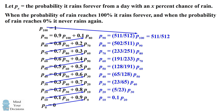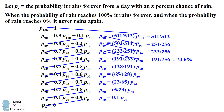We now climb back down the ladder of these sets of equations. We substitute in the probability p sub 90 into the previous state p sub 80, and we'll keep climbing down until we get to p sub 60. And this will be 191 over 256, which is approximately a 74.6% chance that it will rain forever. And this is the answer to our problem.